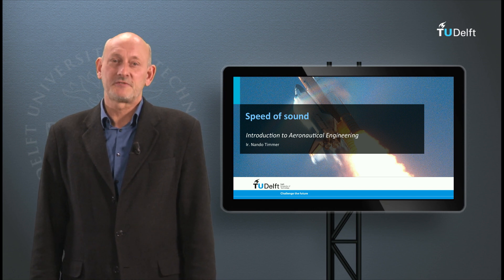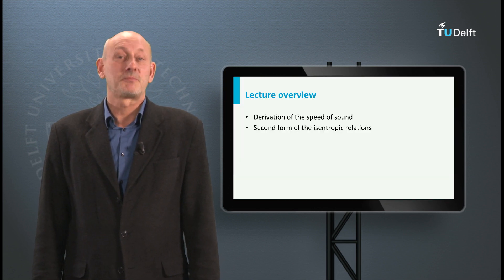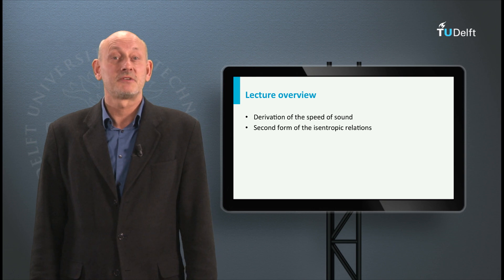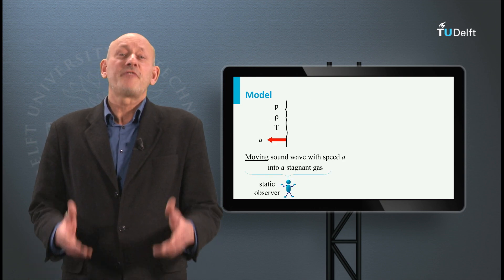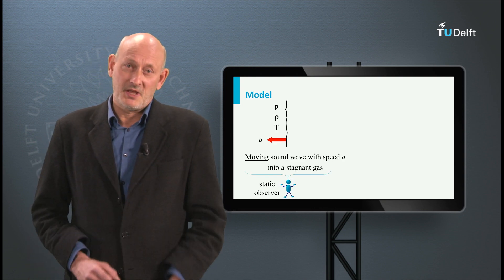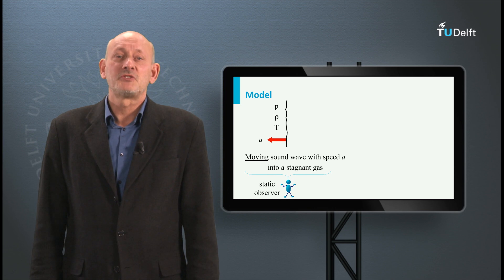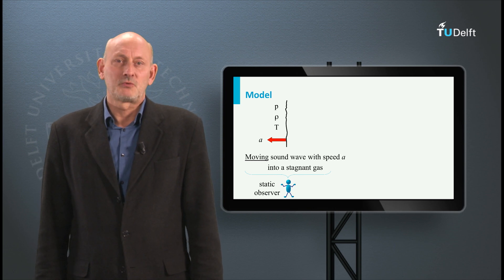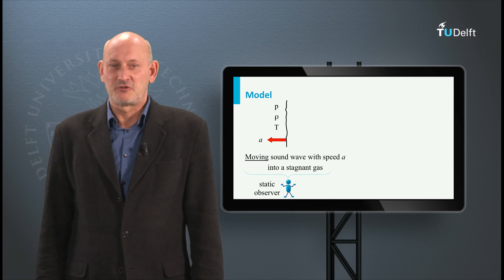This lecture is about the speed of sound and how it relates to the pressure, density, and temperature in a gas. To find a relation for the speed of sound A, we use a one-dimensional model of a moving sound wave into a stagnant gas seen from a static observer.